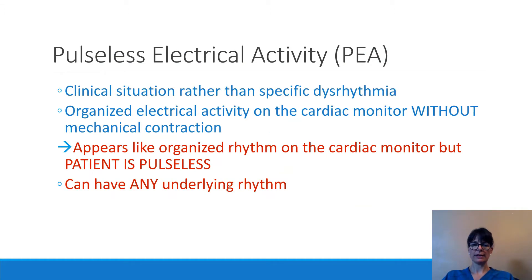Pulseless electrical activity, also known as PEA, is a clinical situation rather than a specific dysrhythmia. The term really gives it away — pulseless electrical activity — which means there can be any organized electrical activity underlying that we can see on the cardiac monitor, but there is no mechanical contraction. There is electrical activity that is not producing a cardiac output, meaning the patient is pulseless.